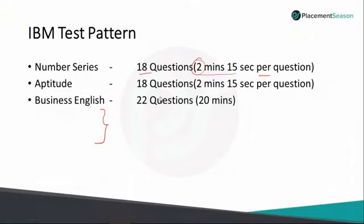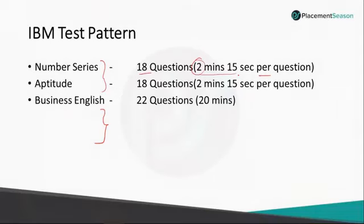The third section is Business English, where you will get 22 questions and you have 20 minutes total to answer them. This is not a per-question time limit like the previous two sections. The 2 minutes 15 seconds per question rule applies only to Number Series and Aptitude. For Business English, you simply have 20 minutes total for all 22 questions.